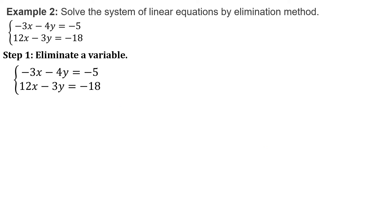Another example. We have negative 3x minus 4y equals negative 5, and 12x minus 3y equals negative 18. Let us proceed in eliminating a variable. Before we can eliminate, let us observe their coefficients. For variable x, we have negative 3 and 12. And for variable y, we have negative 4 and negative 3.